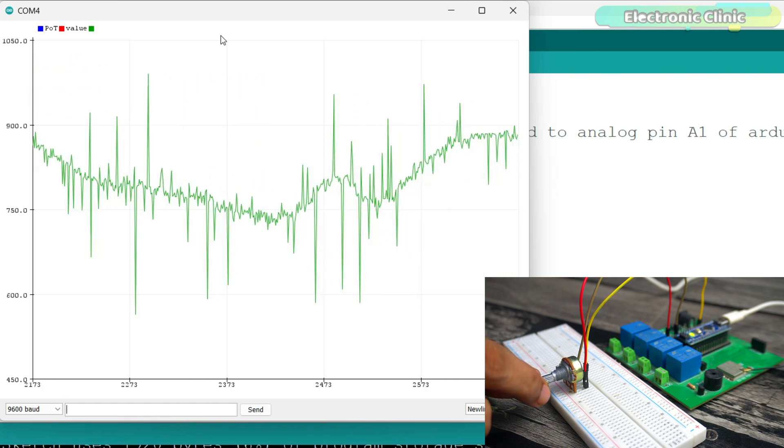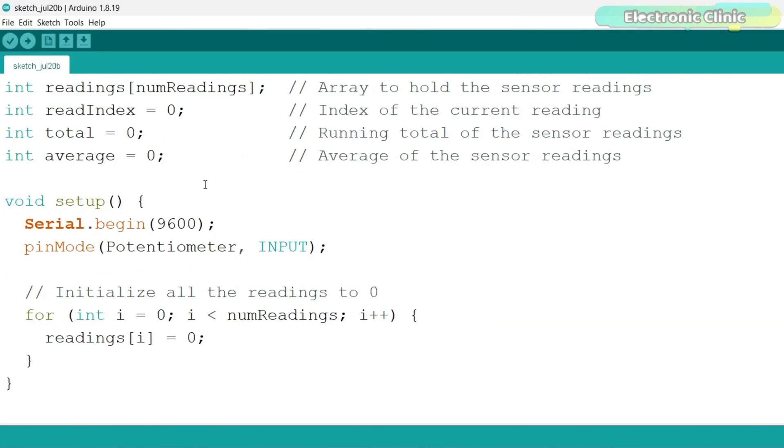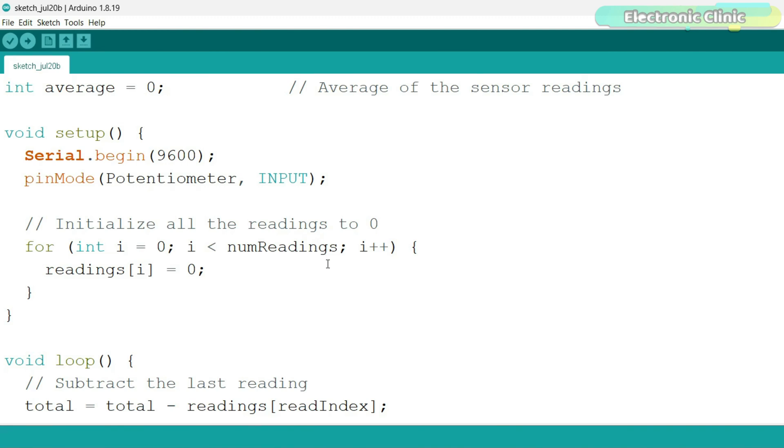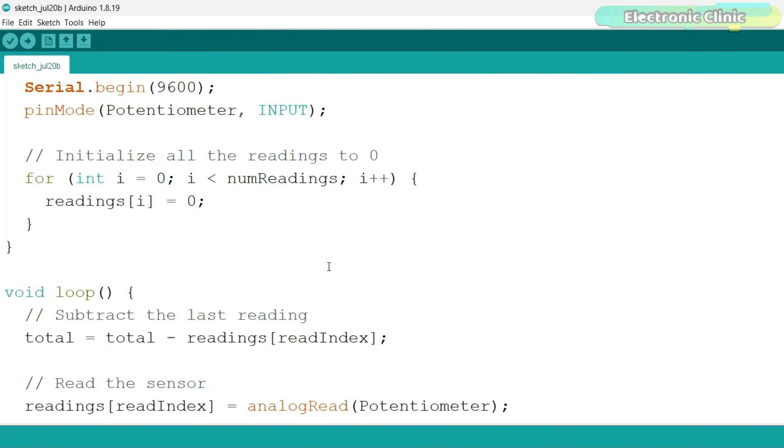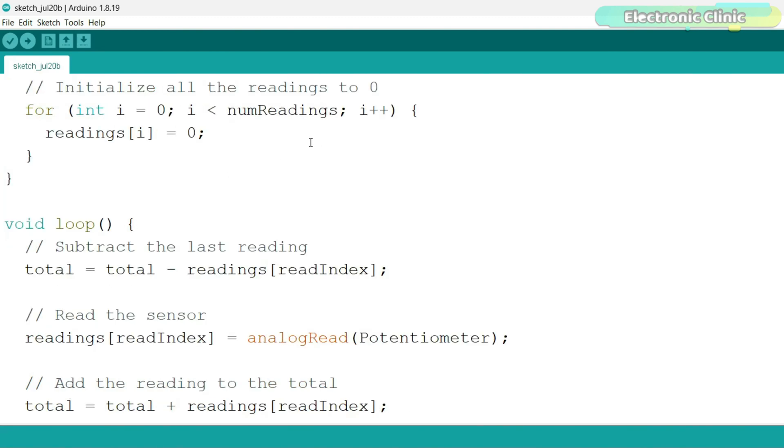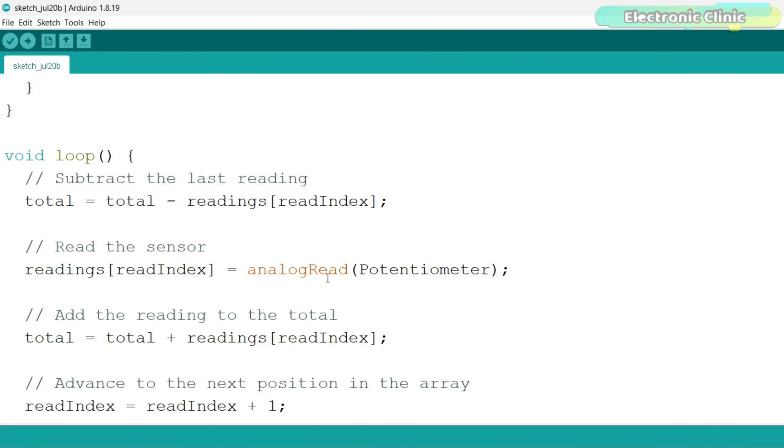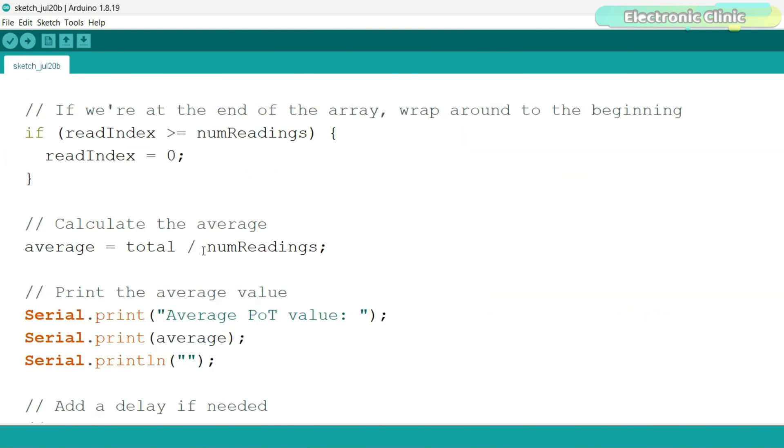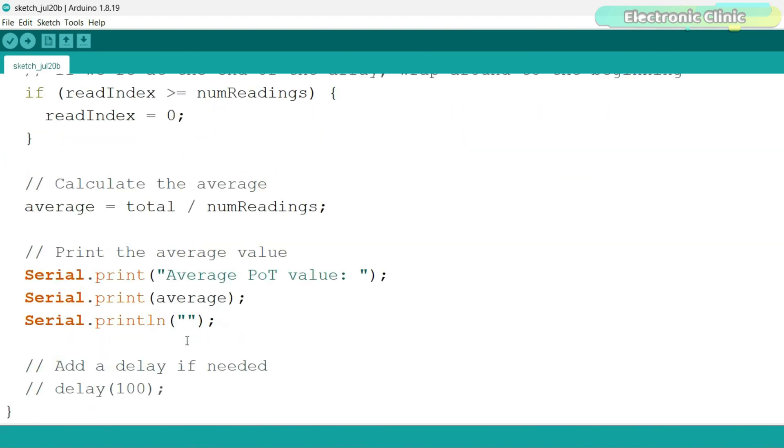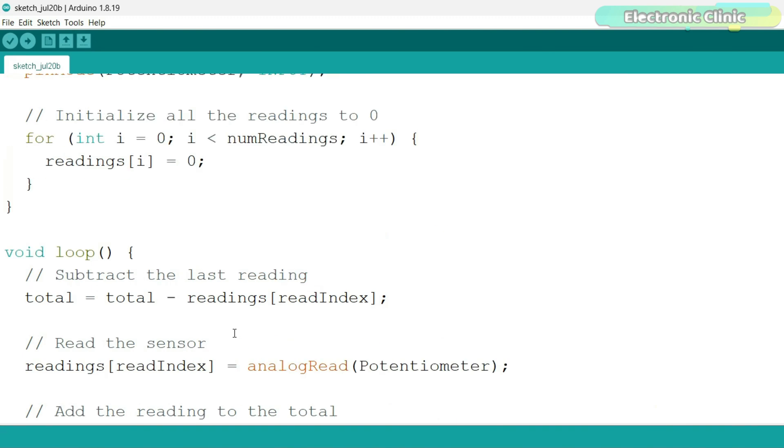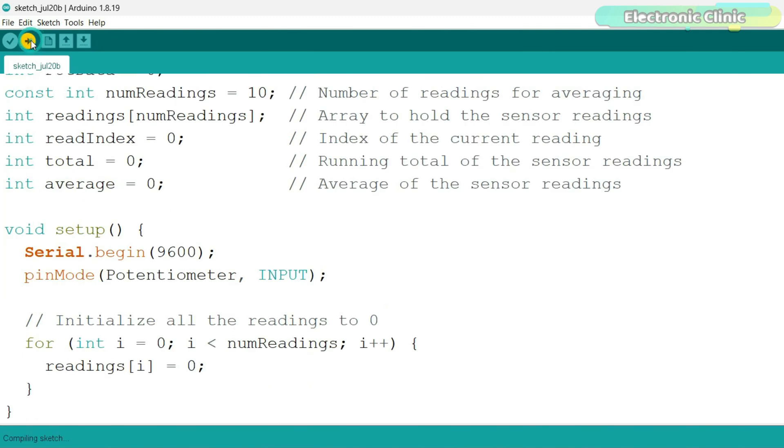Let's implement the averaging technique. I modified the previous program. This time, it doesn't send the potentiometer value directly. Instead, it reads the potentiometer value 10 times, calculates the average, and then sends the final value to the serial monitor or serial plotter. Let's upload this program and see if it's going to make any difference.